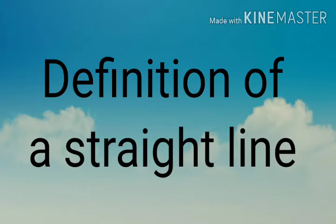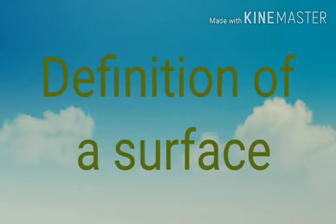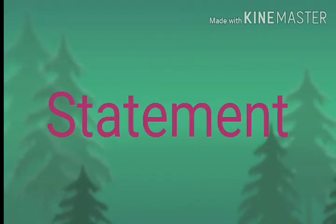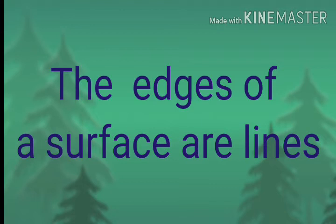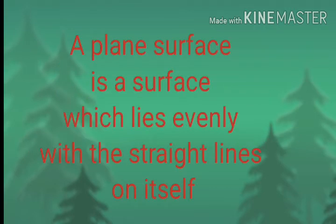The next one is the definition of a straight line: a straight line is a line which lies evenly with the points on itself. Then the fifth definition is of a surface: a surface is that which has length and breadth only. The next statement is: the edges of a surface are lines. The last definition is of a plain surface: a plain surface is a surface which lies evenly with the straight lines on itself.